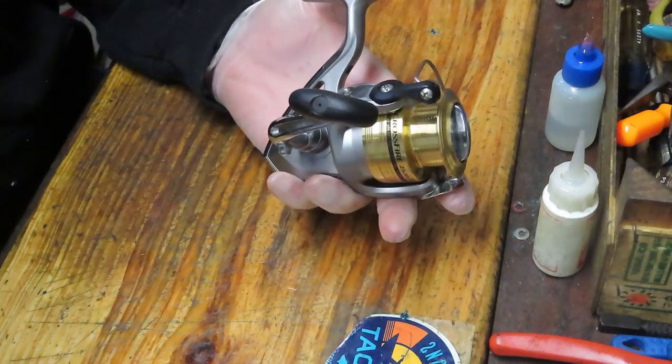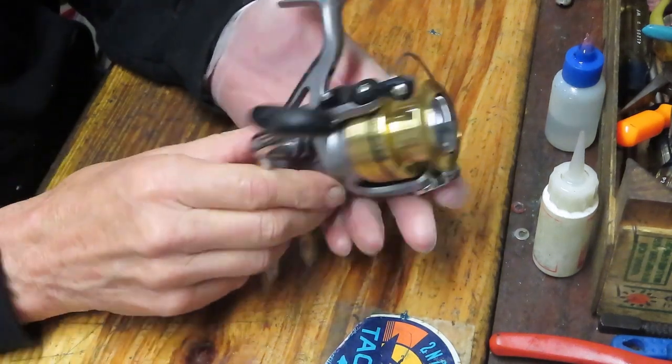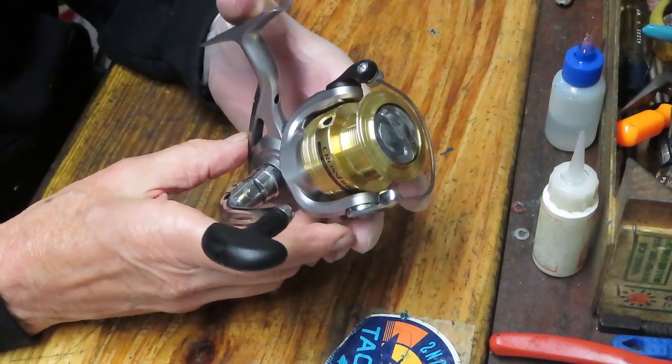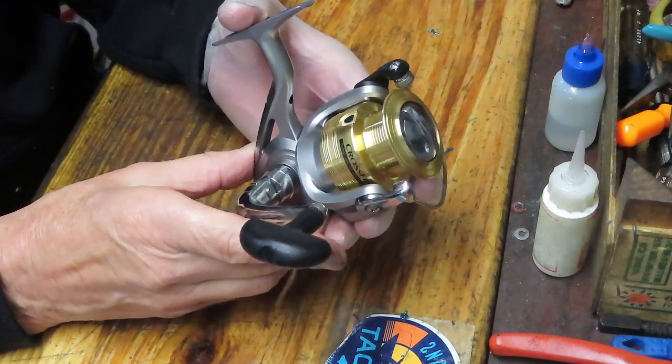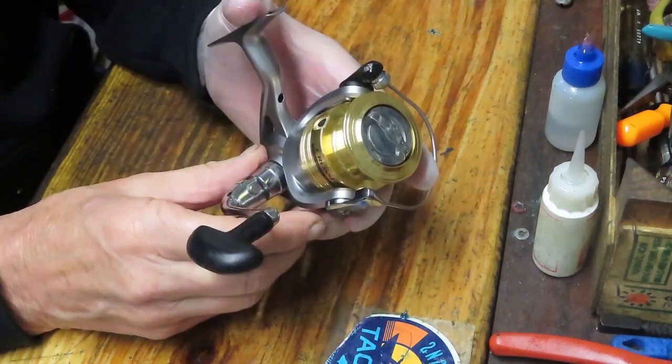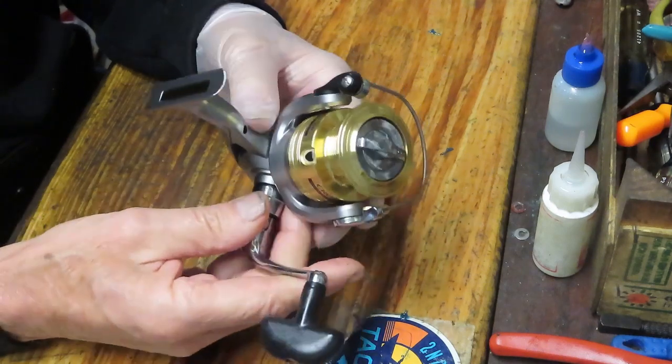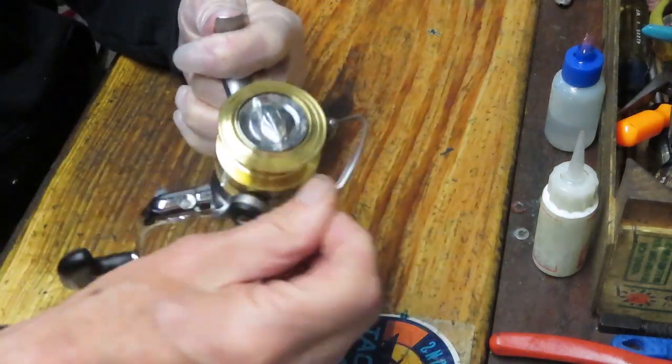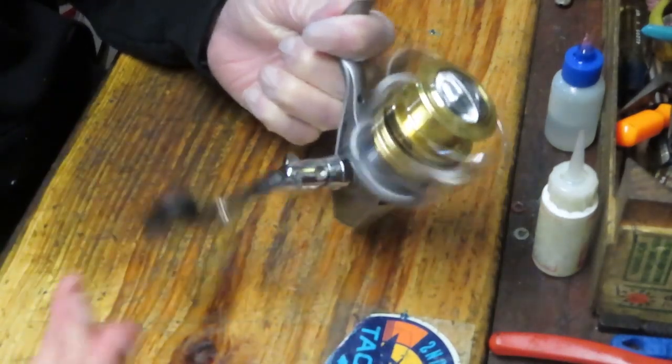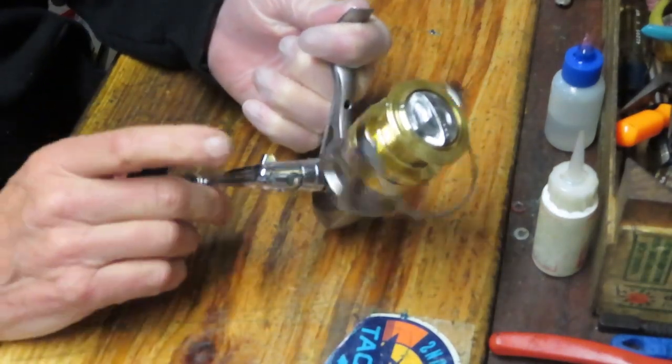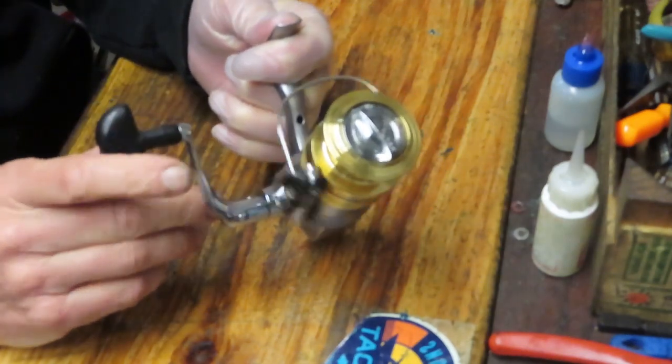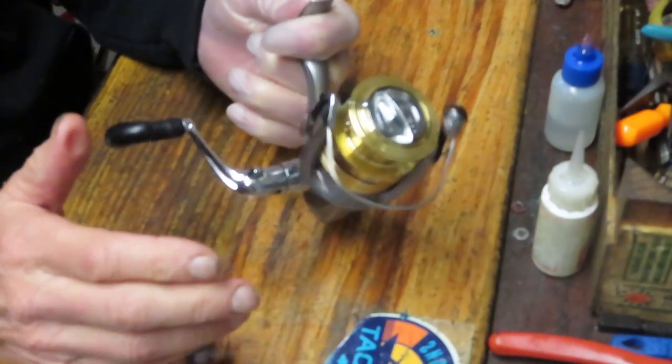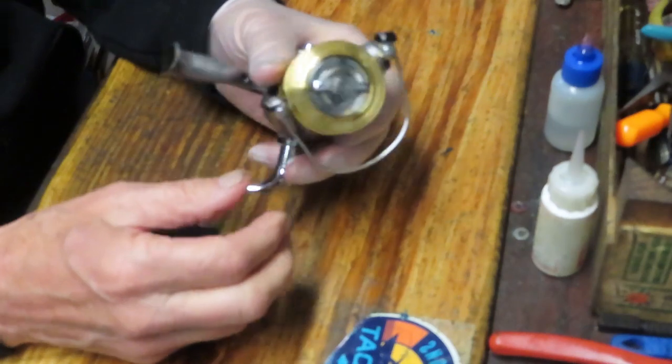Daiwa has this one in the value-priced series. The entry level is the Sweepfire, and the Crossfire is one up from that. Overall it spins nice and easy. This one is set up as a right-hand crank, it can go either way. I was sent this by Joshua, and he asked me to make sure it keeps running for a long time to come, so that's what we're going to do.